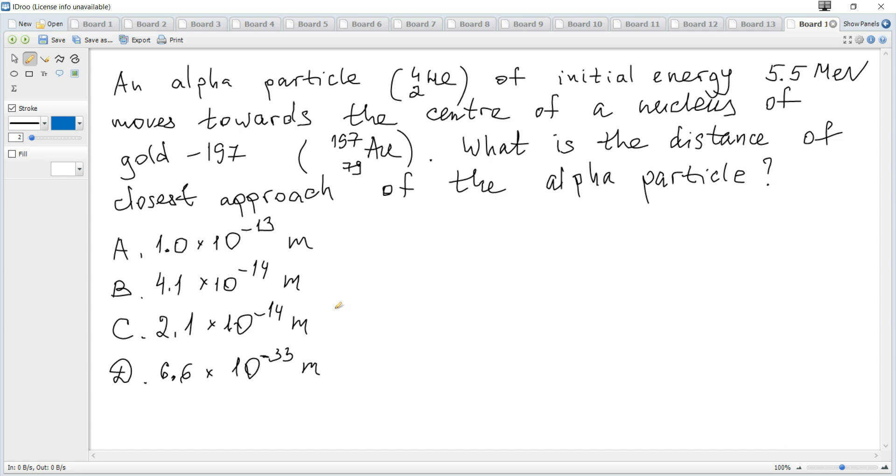An alpha particle of initial energy 5.5 mega electron volts moves towards the center of a nucleus of gold. What is the distance of closest approach of the alpha particle?